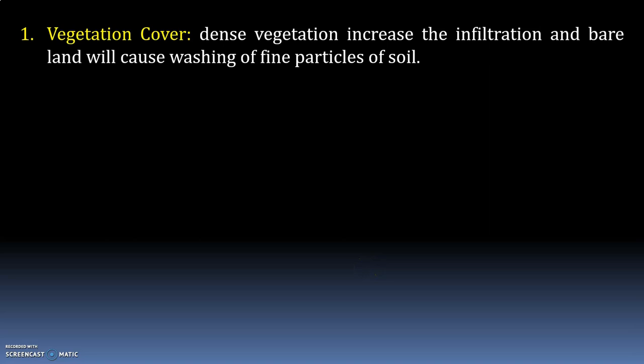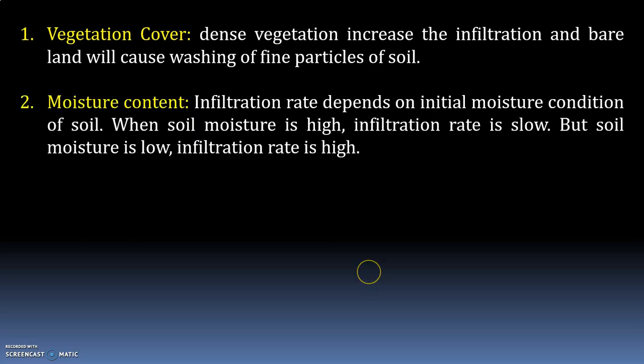The first factor is vegetation cover. If the area is covered by grass, vegetation, and bushed plants, infiltration capacity will be more. On the other hand, if the soil surface is bare, the impact of raindrops will cause washing of finer particles and clog the surface, resulting in retardation of infiltration. The second factor is moisture content. When soil moisture is high, the infiltration rate is low; when soil moisture is low, the infiltration rate is high.